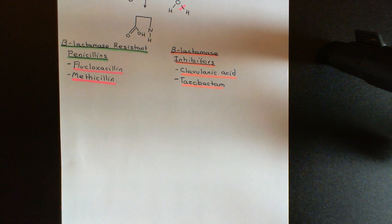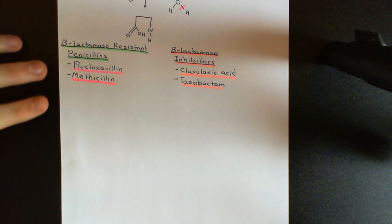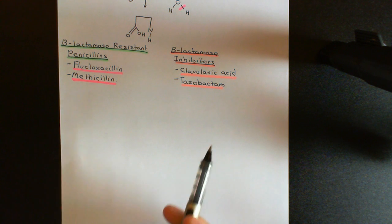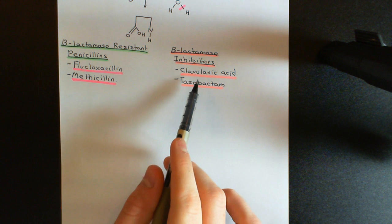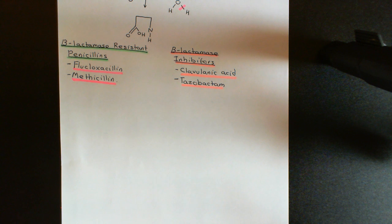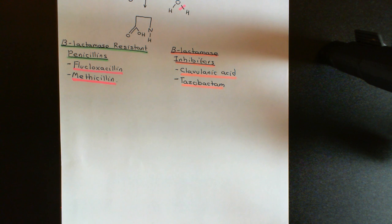Flucloxacillin and methicillin are examples of beta-lactamase resistant penicillins, but there are lots of other ones as well — those are just two notable examples. Another strategy to cope with over-expression of beta-lactamase enzymes was the development of beta-lactamase inhibitors such as clavulanic acid and tazobactam. These are drugs given in combination with a penicillin antibiotic; their job is to inhibit the beta-lactamase enzyme whilst the penicillin is then free to inhibit the peptidoglycan transpeptidase without getting broken down.